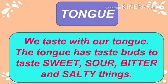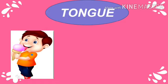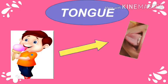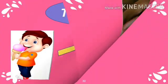We taste with our tongue. The tongue has taste buds to taste sweet, sour, bitter, and salty things. For example, ice cream is sweet, lemon is sour, and bitter gourd is bitter in taste. See in the picture — a boy is licking ice cream with his tongue, and he knows it tastes sweet — with the help of his tongue.